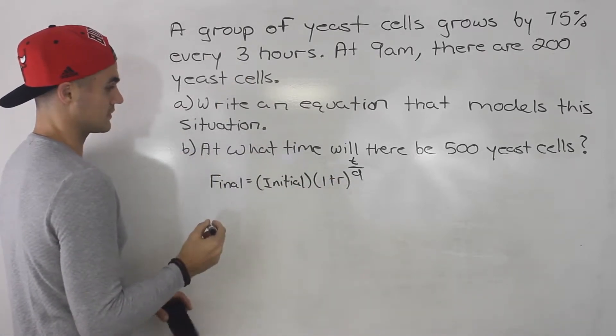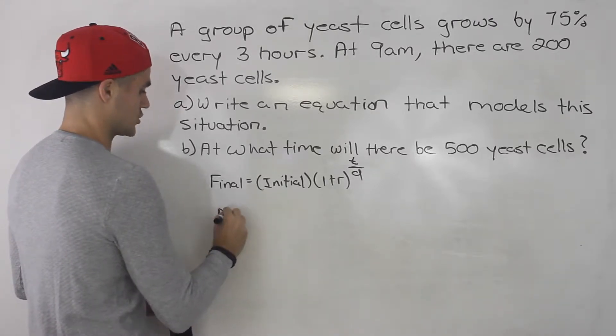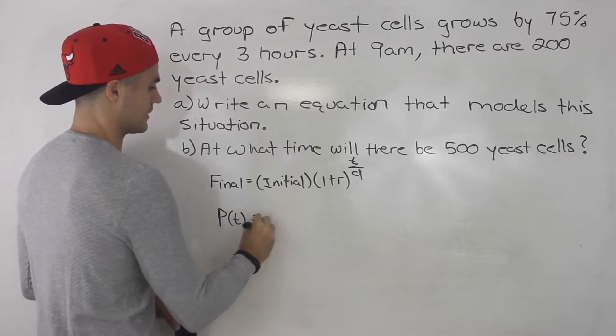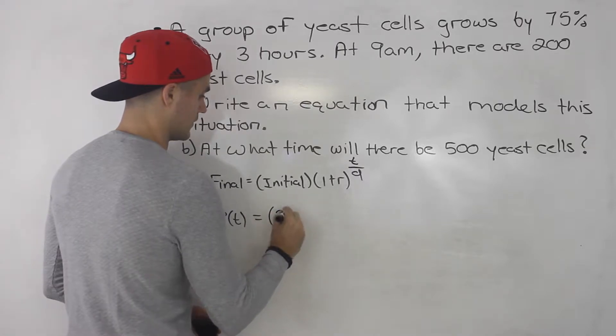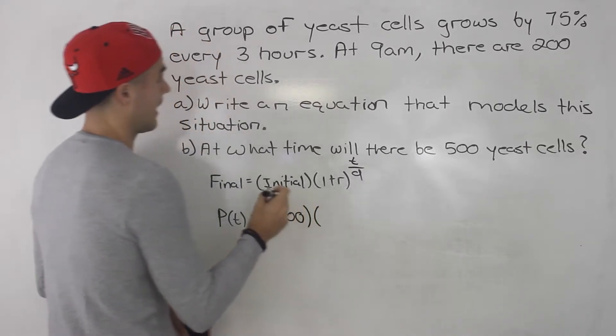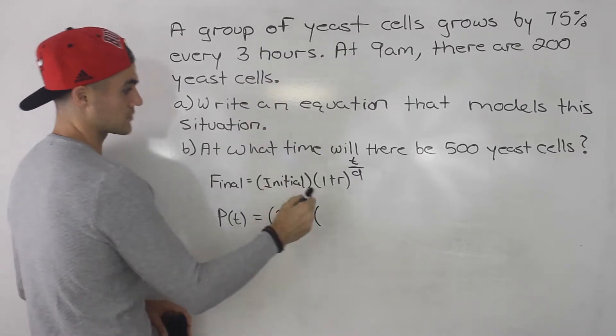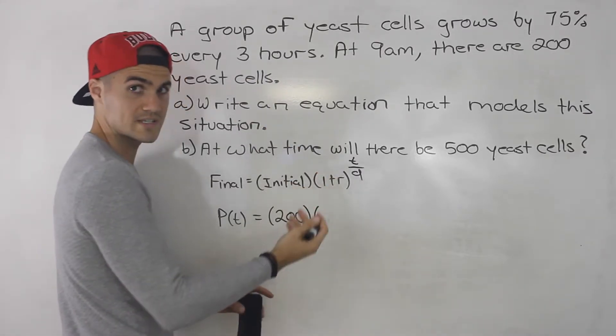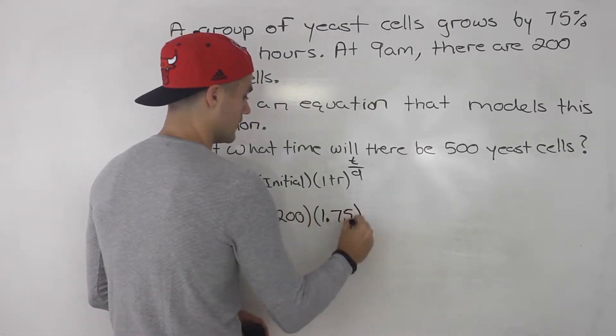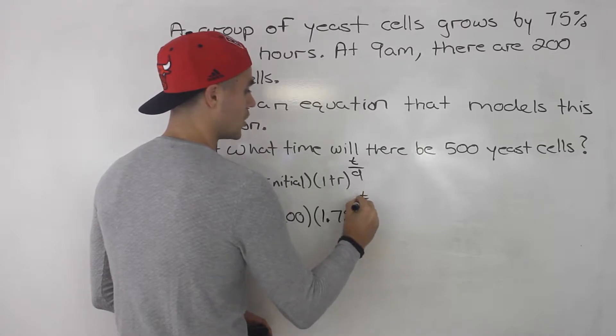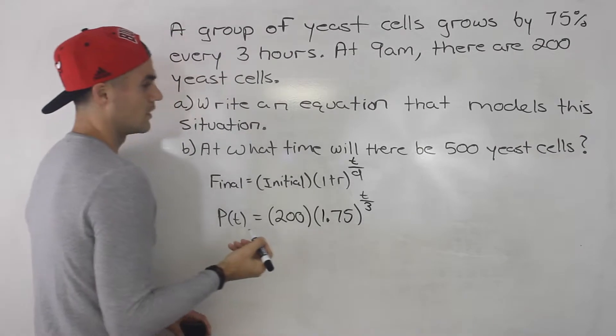So for this question specifically, the population in terms of t is going to be what? The initial amount is 200, and these cells are growing by 75% every three hours. So this bracket would be 1 plus 0.75. Remember, this r has to be in decimals, so you'll have 1.75 here to the power of t over 3, because it's every three hours we put a three there.